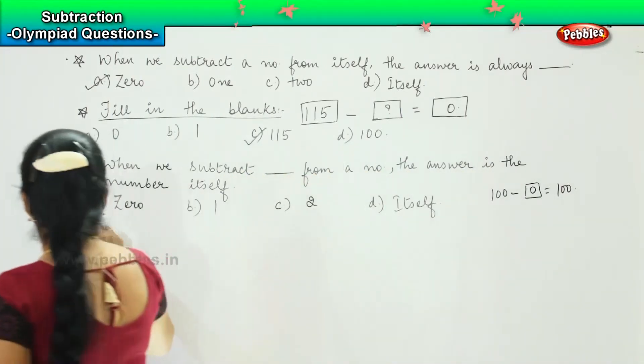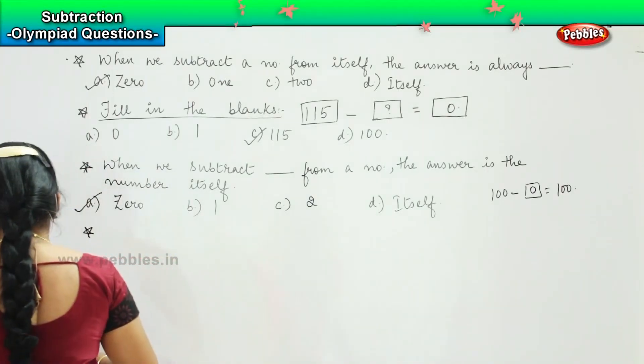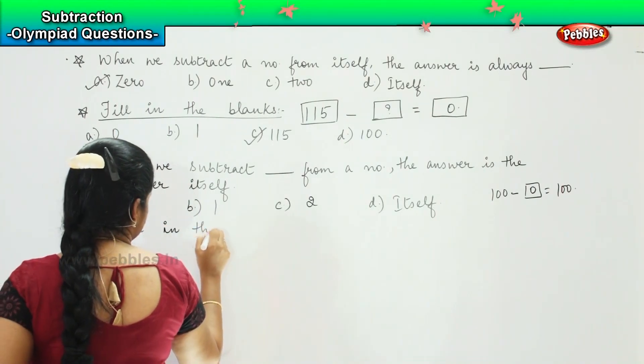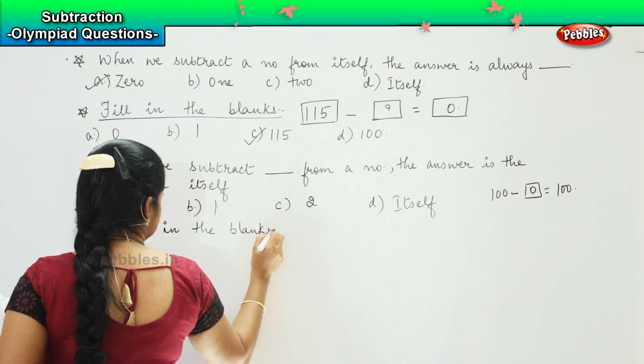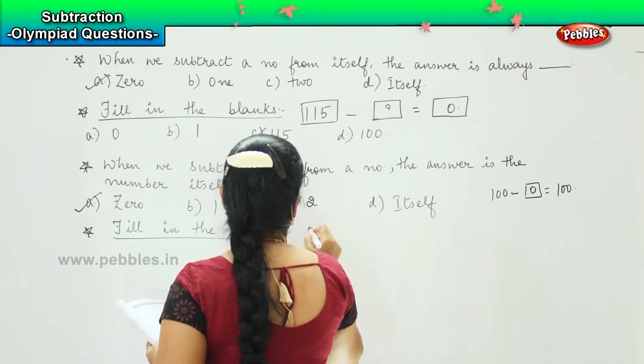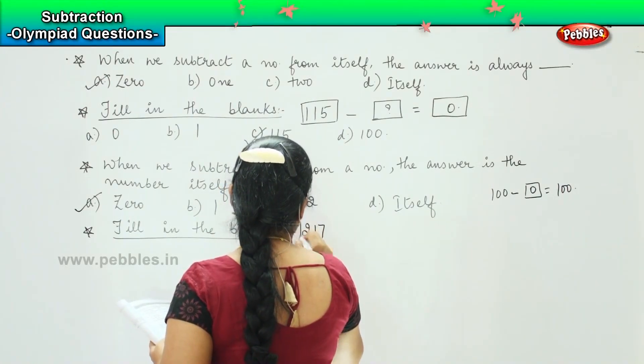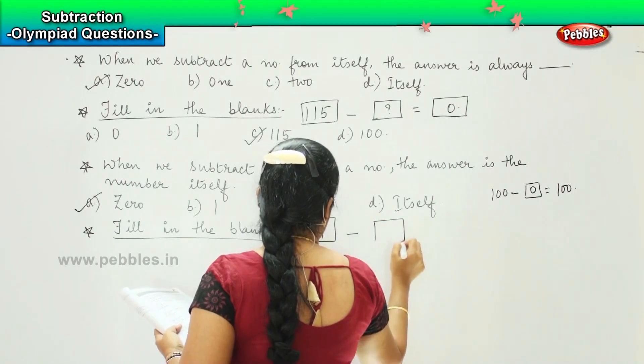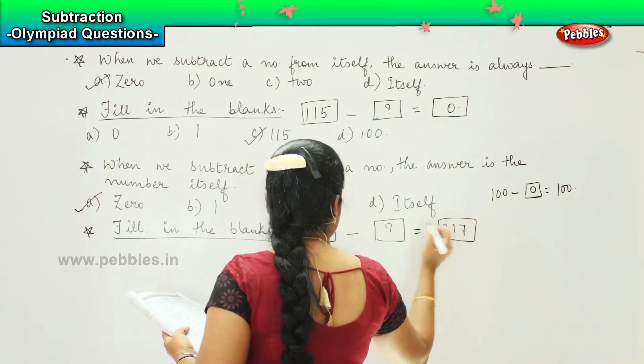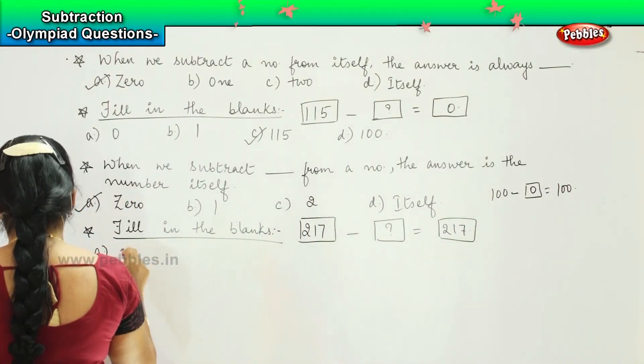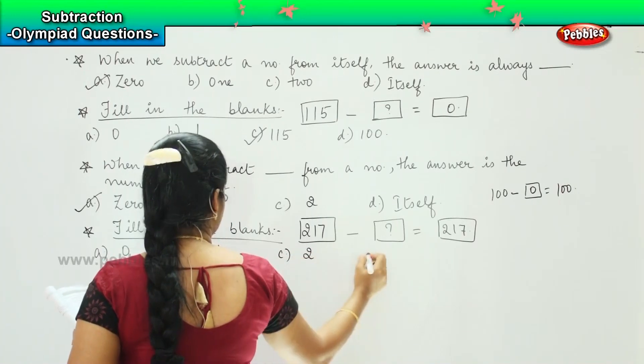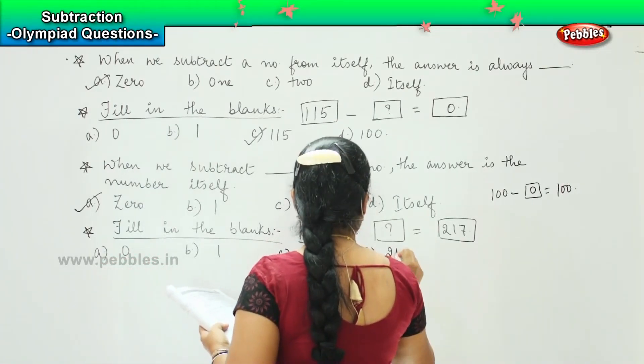Ok, so the next question is fill in the blanks, and the question is 217 minus something equals 217. Ok. And your options are: a) zero, b) one, c) two, and d) 217.